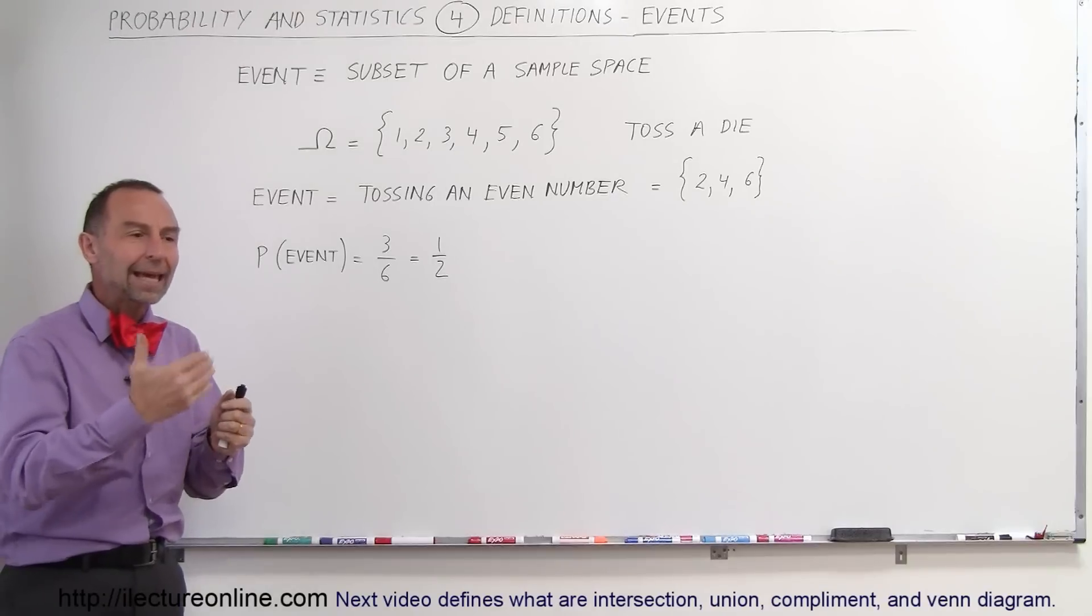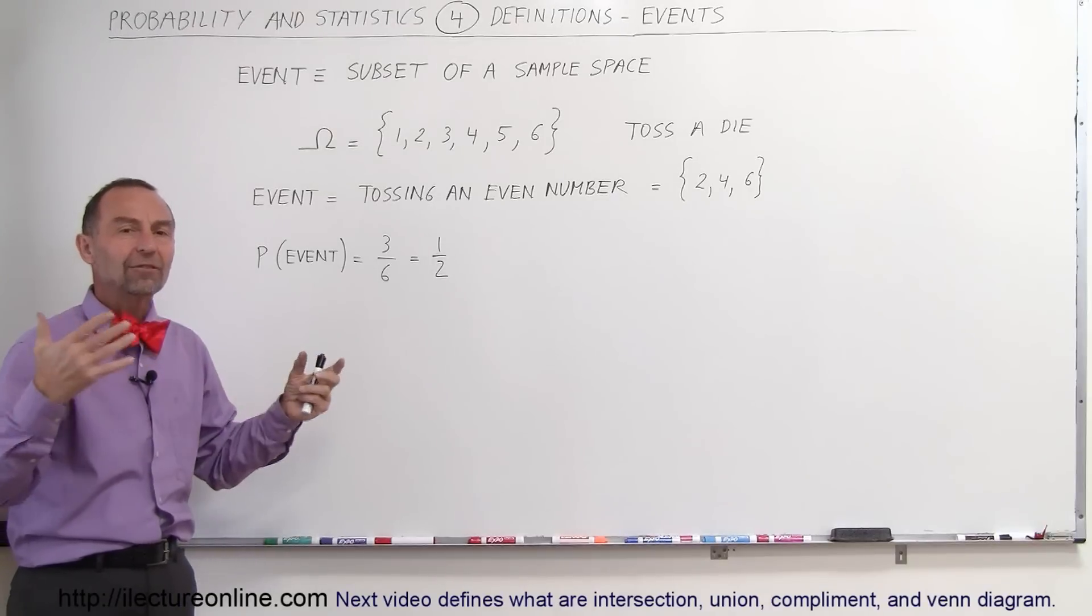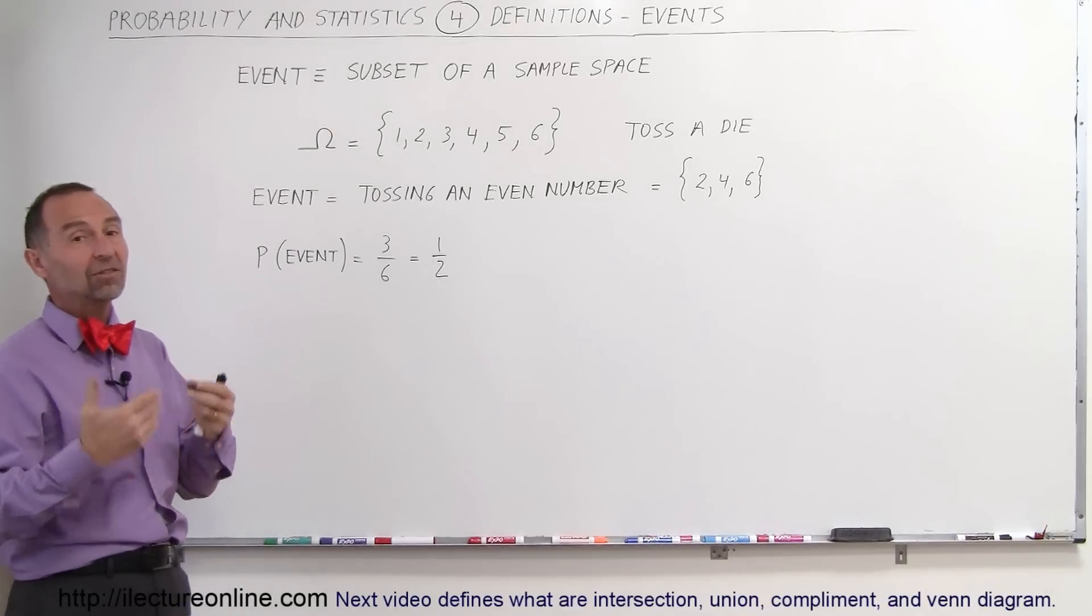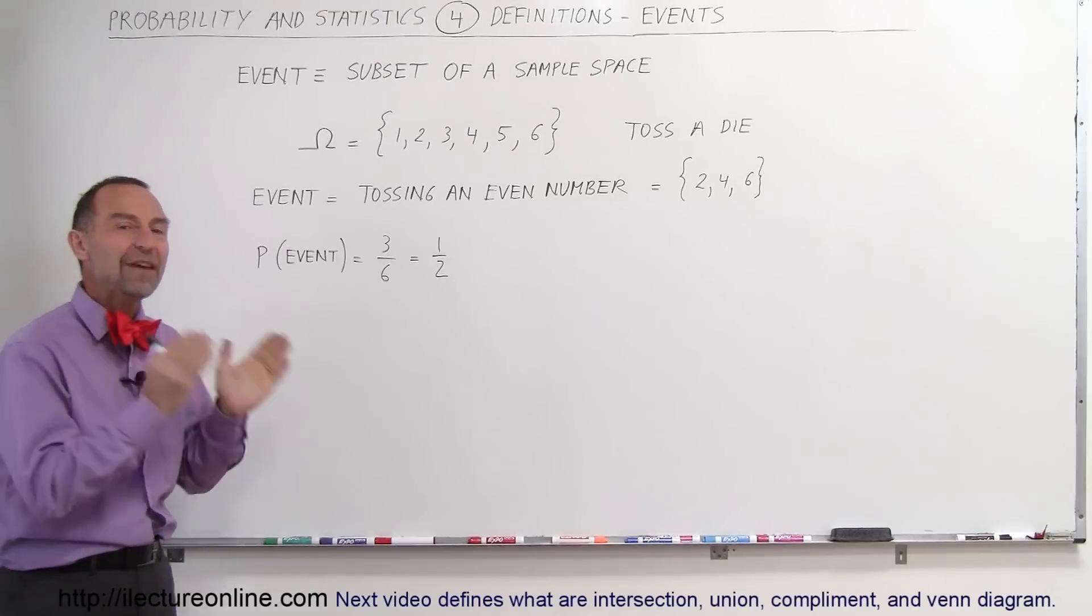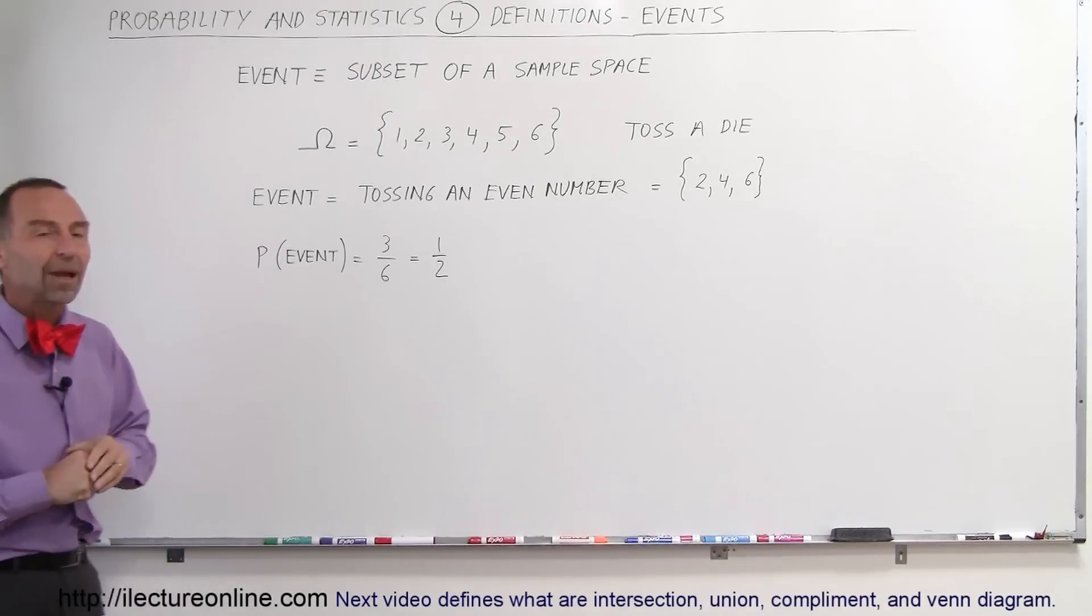You're doing something, and it has a certain set of outcomes. In this case, the set of outcomes is 2, 4, and 6. So that then becomes the event of this particular sample space.